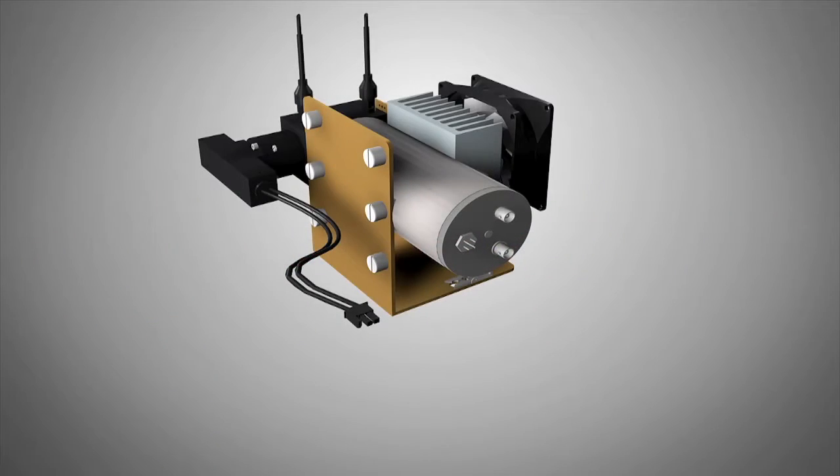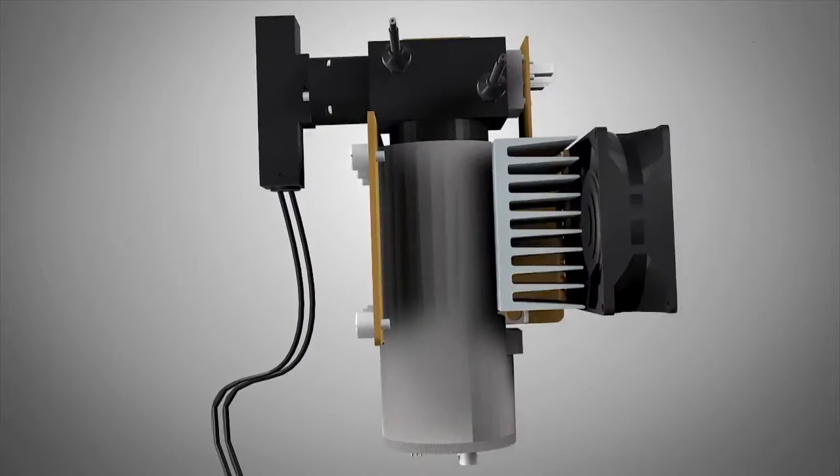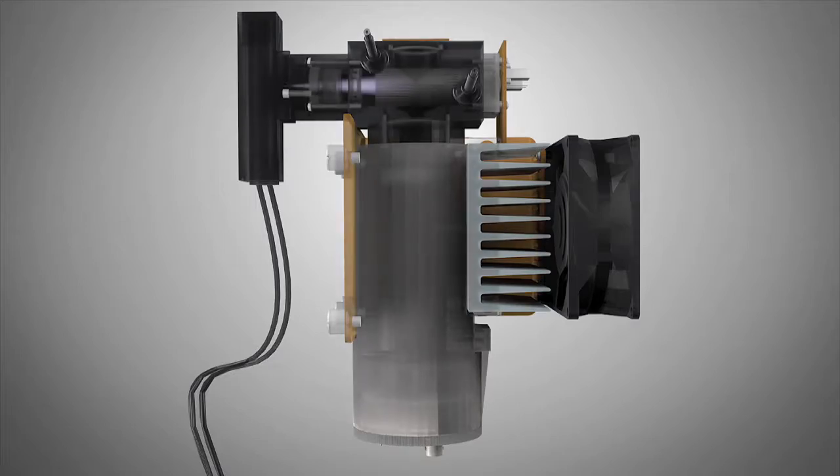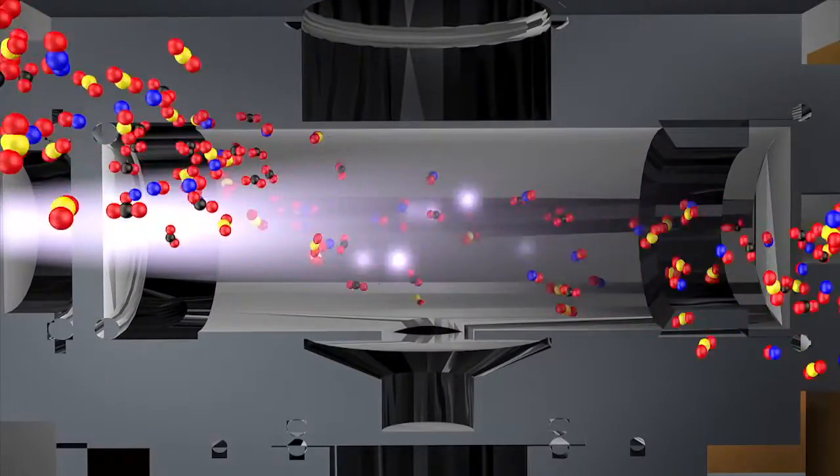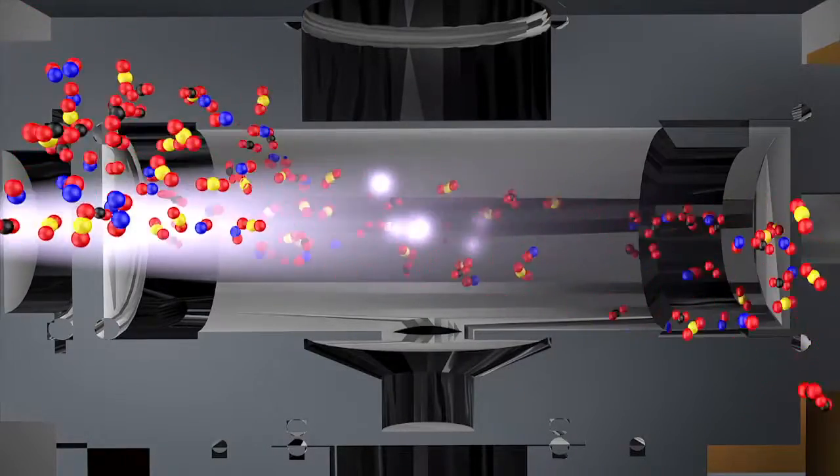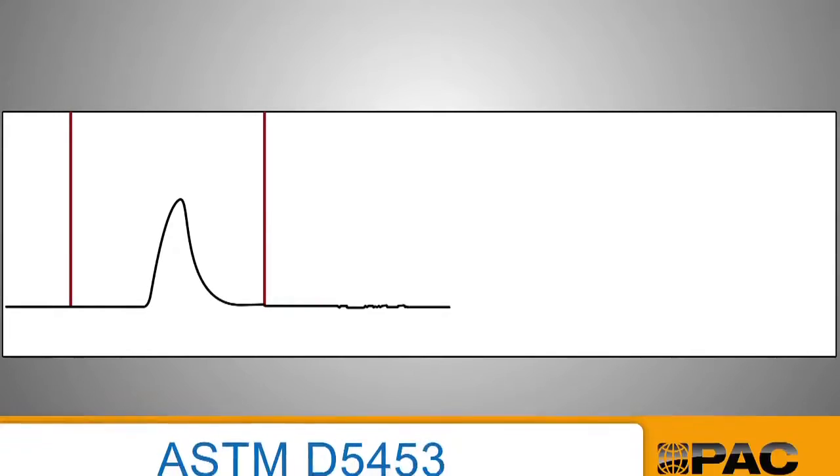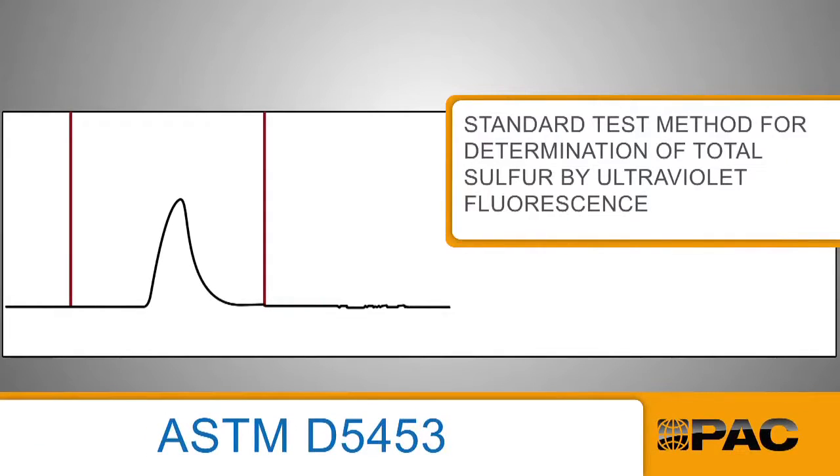The sample is exposed to ultraviolet light which excites any sulfur dioxide. Upon returning to a stable state, energy is emitted as a flash of light which is measured by a photomultiplier tube. The amount of light emitted is proportional to the amount of sulfur in the sample. The detection method is based on primary test method ASTM D5453 for high correlation to your laboratory results.